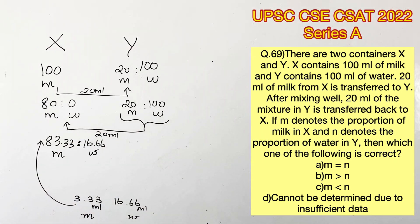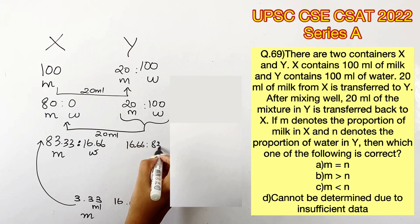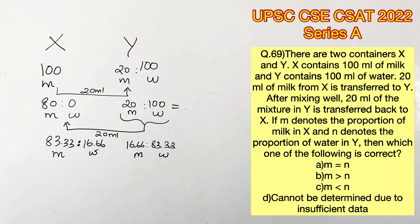Now we'll subtract the 20 ml from Y as well. So we'll subtract 3.33 ml milk from 20 ml milk and 16.66 ml water from 100 ml of water. So 20 - 3.33 will give us 16.66 ml and 100 - 16.66 will give us 83.33 ml.